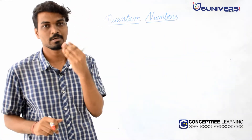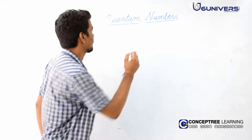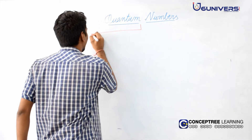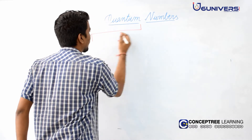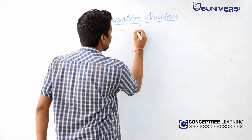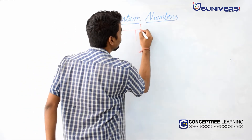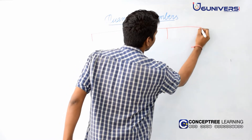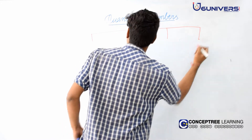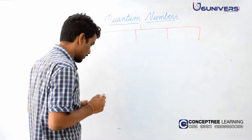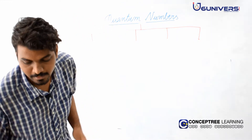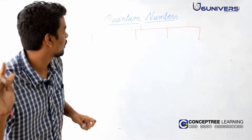There are four quantum numbers — 1, 2, 3, and 4. Nothing more, just four quantum numbers.